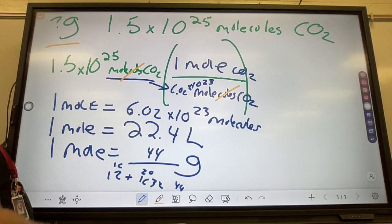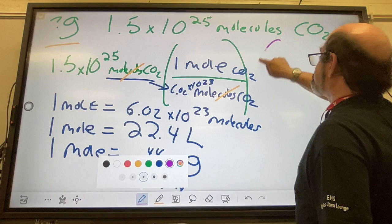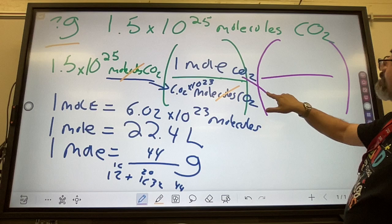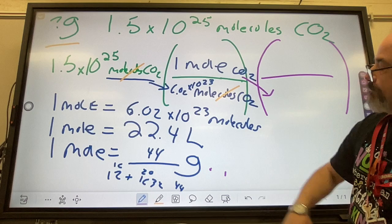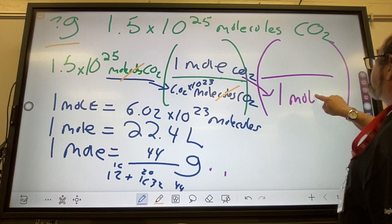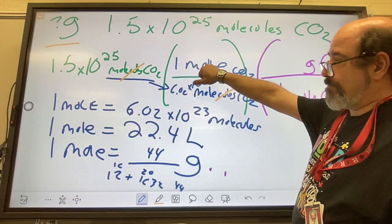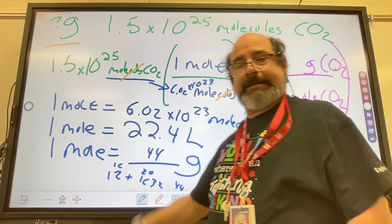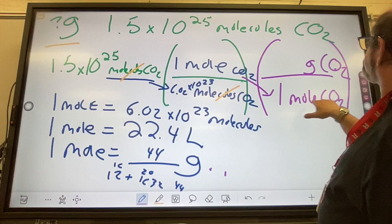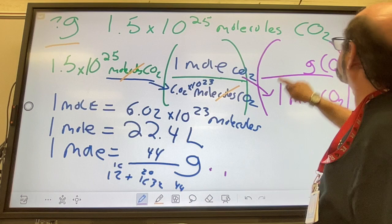So, now, the molecules of CO2 cancel and you're left with moles. Do we want moles? No. We want grams. So, we need another conversion factor to get rid of the moles. And here it is. Moles of CO2 goes to grams of CO2. Now, notice, one mole, one mole. All of these conversion factors have one mole. When you do stoichiometry, it's going to be a little different. But, for now, one mole is one mole.